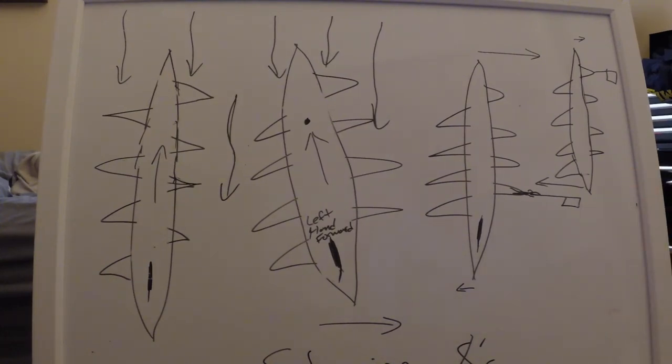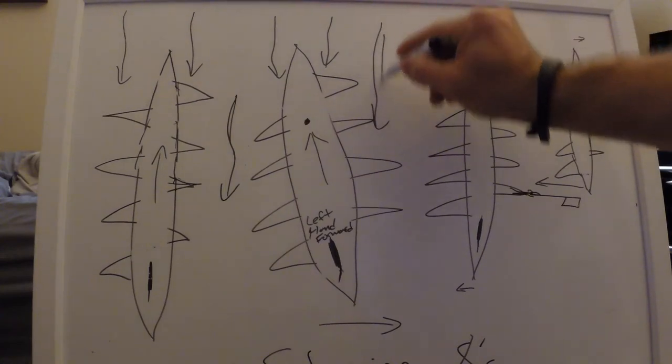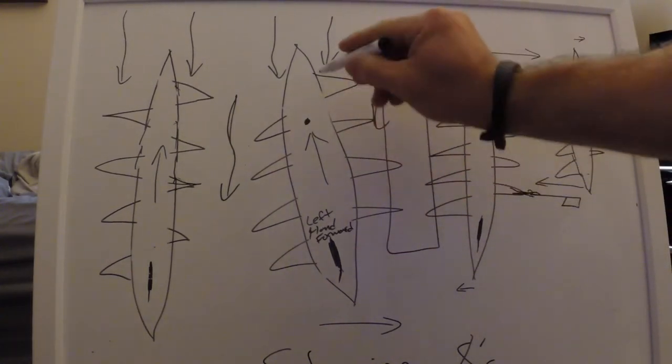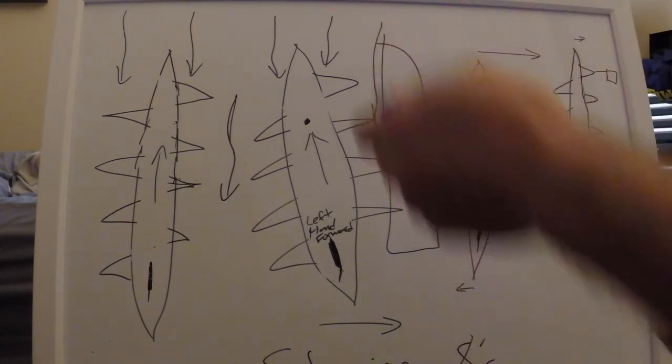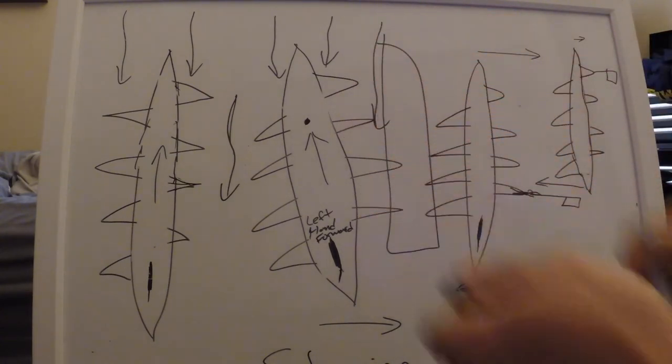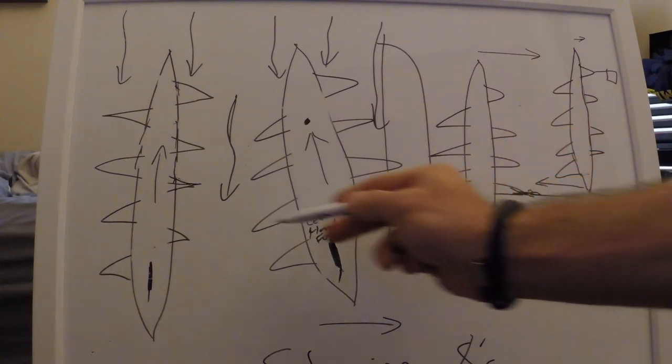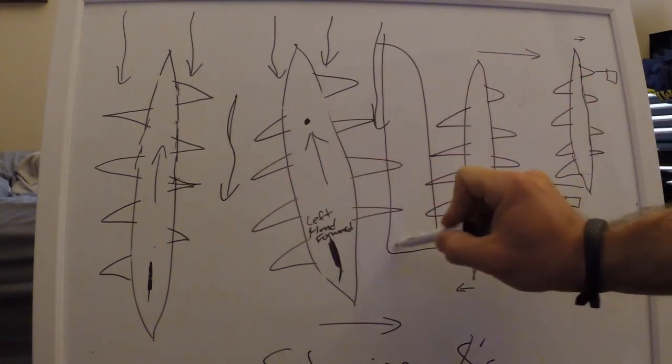Say you're approaching a dock that's right here and you're in this boat and you want to turn away from the dock because you're afraid you're going to hit it. Well, you wouldn't want to put your left hand forward and turn to the left. You want to turn to the right actually and push your stern away from the dock to keep you from hitting the corner right there.